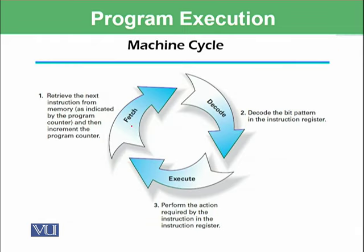This would be the machine cycle. First of all, we perform fetch — we retrieve the next instruction from memory as indicated by the program counter, and then increment the program counter.